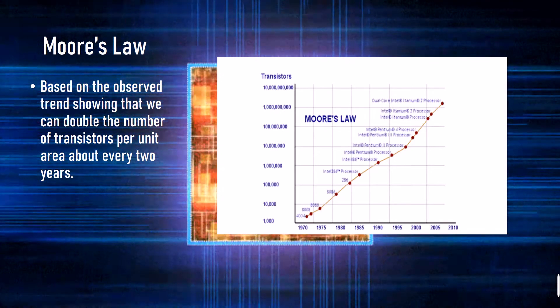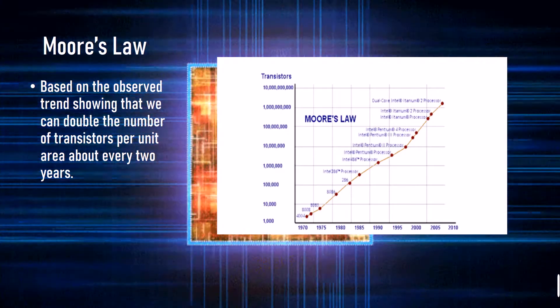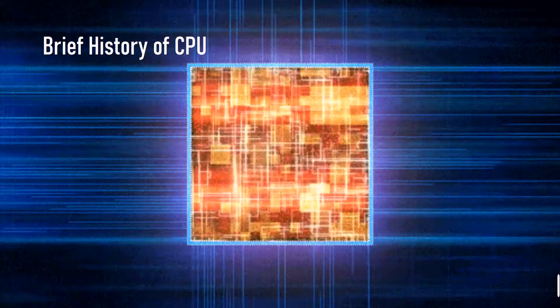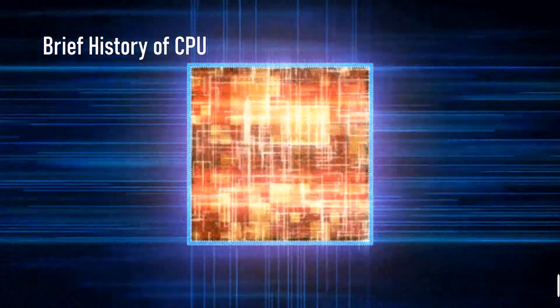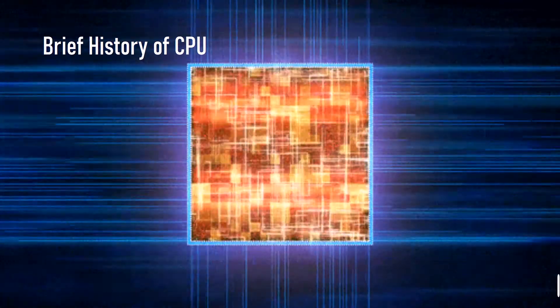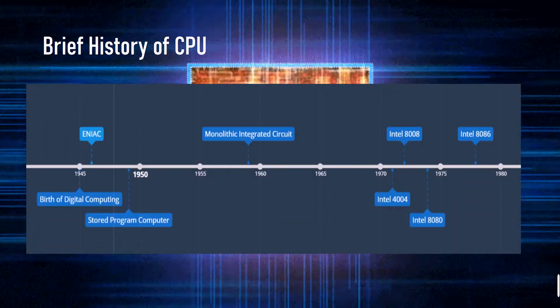Modern CPU uses Moore's Law, which is based on the observed trend showing that we can double the number of transistors per unit area about every two years.